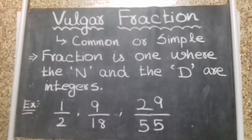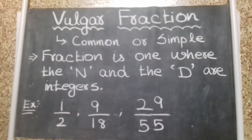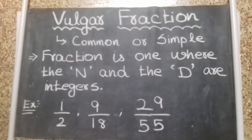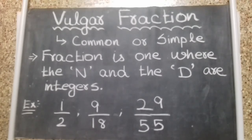Fractions are part of it. It is also known as common or simple fraction. A vulgar fraction, by definition, is one where the numerator and the denominator are integers. So when both the numerator and denominator are integers, that is called a vulgar fraction.